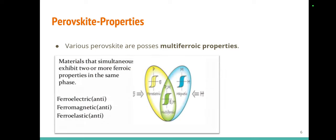This perovskite possesses multiferroic properties. Multiferroic means several ferroic properties — 'ferro' refers to materials which can retain their property after removing them from the applied field. That field can be an electric field, a magnetic field, or a mechanical field. So perovskite materials can have ferroelectric, ferromagnetic, and ferroelastic properties, which is why collectively we call them multiferroic.